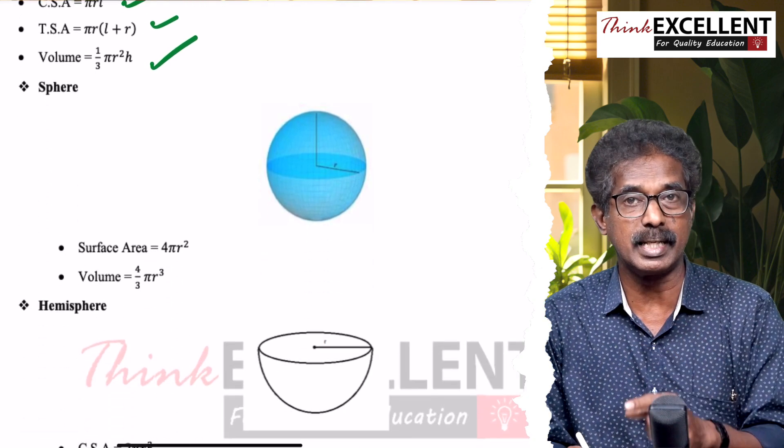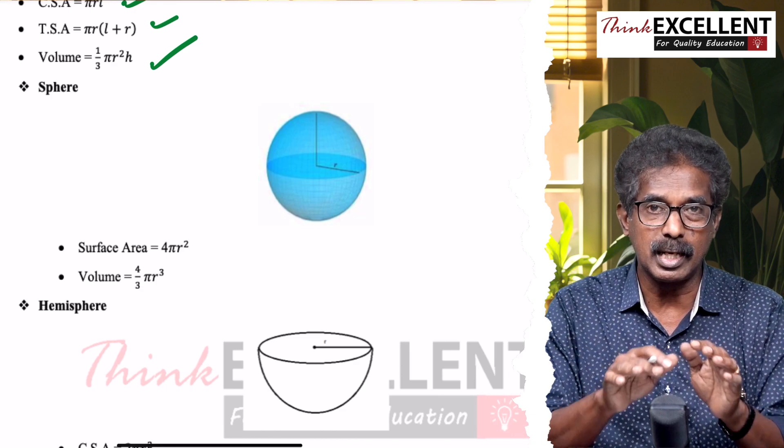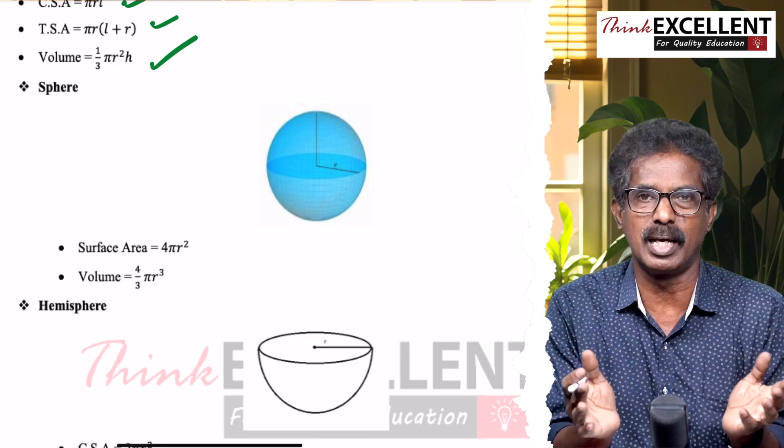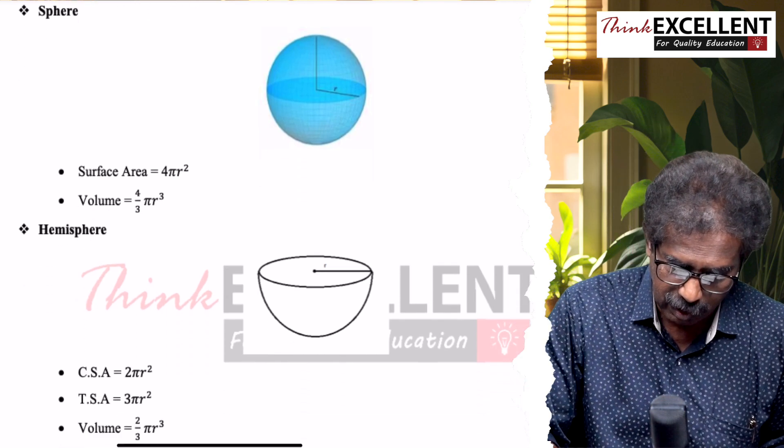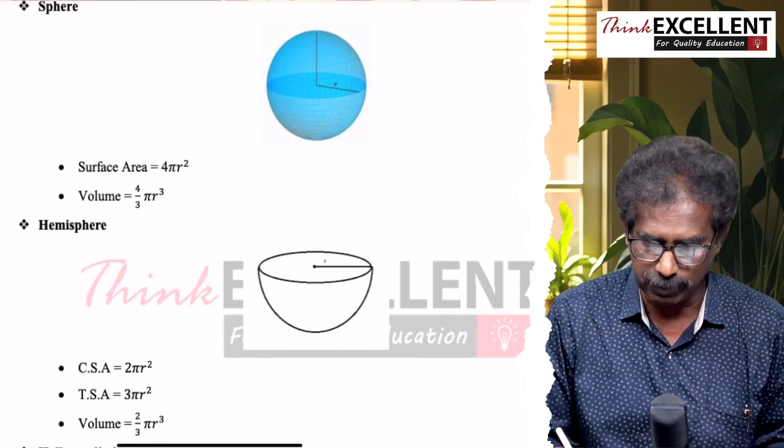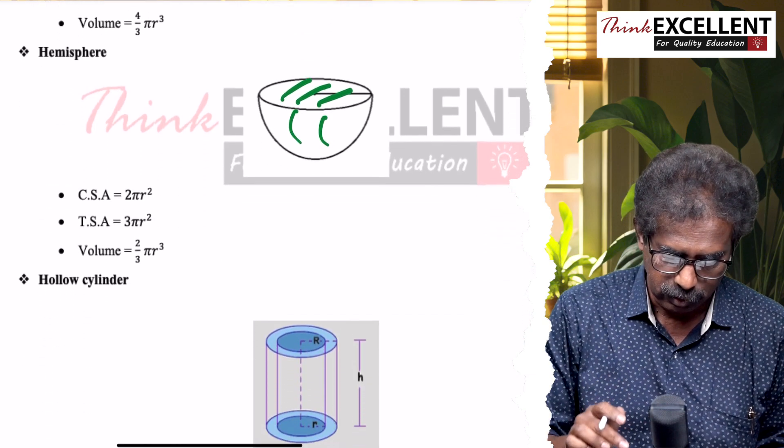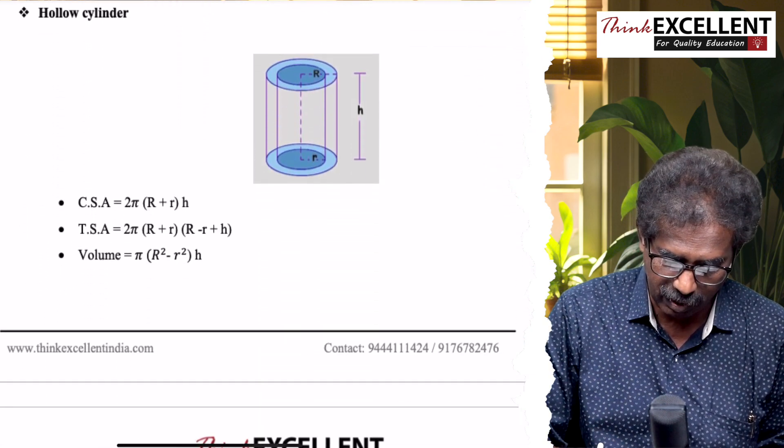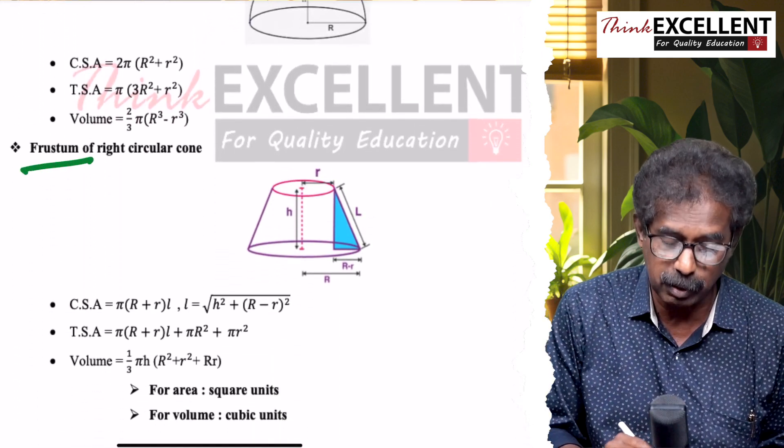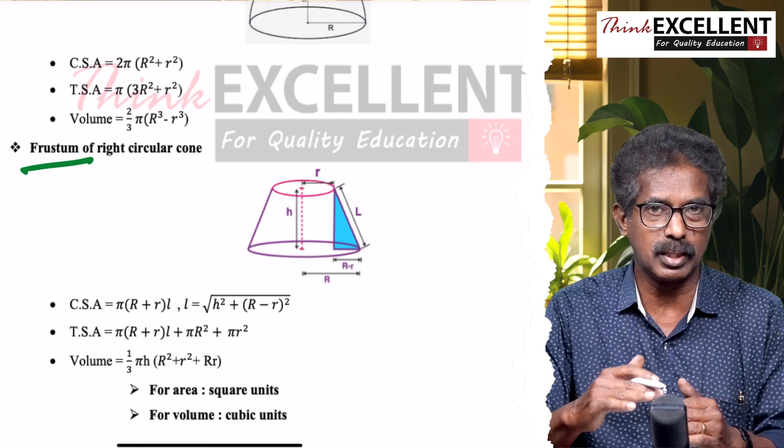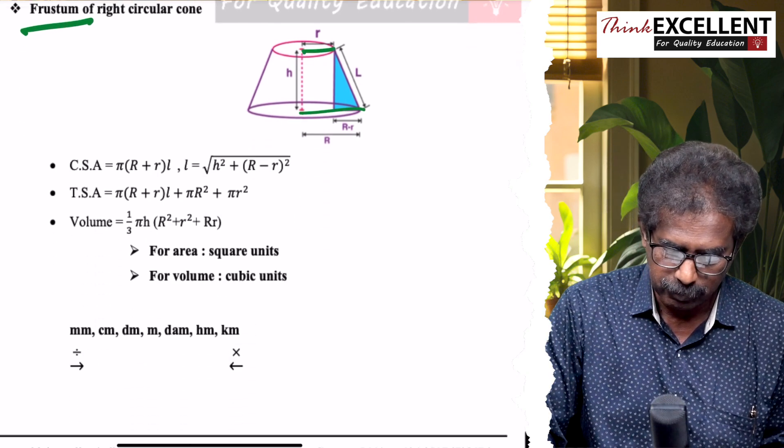Then sphere - only radius is there. Volume, then surface area. Sphere has curved surface and total surface are same. Just two formulas. Hemisphere - it is also there. Curved surface and total surface also we have. Then hollow cylinder - formulas go through. Hollow sphere. Hemisphere, frustum of cone - very, very important. The frustum of cone has two radii: small radius r and capital R. In that, volume and total surface area, curved surface area formulas, go through.